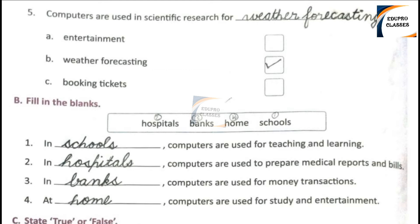Number 2: In blank, computers are used to prepare medical reports and bills. Right answer: Hospitals. Number 3: In blank, computers are used for money transactions. Right answer: Banks.